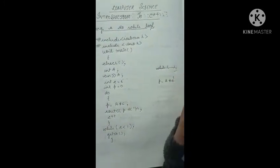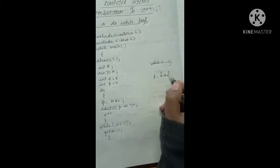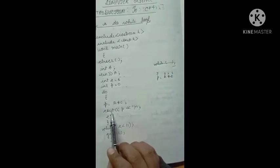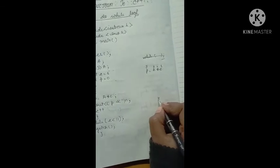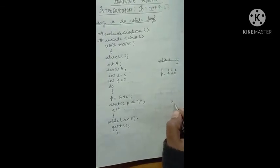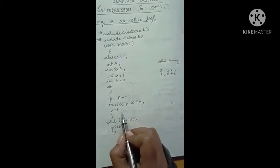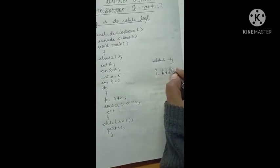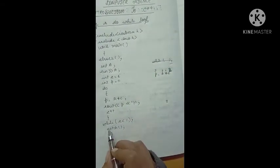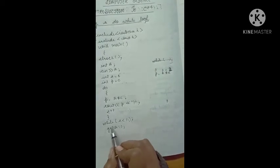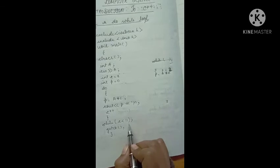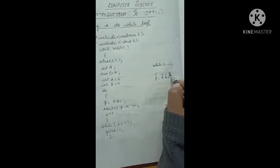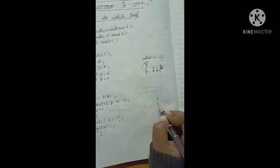The value of c starts at 1. Suppose we want to print the table of 3, so we give a equals 3. Three multiplied by one gives three. The cout p statement displays 3 on the output screen. Then c plus plus increases c to 2. Now the computer checks the condition: is c less than 11? Yes, so again 3 multiplied by 2 equals 6, and 6 is printed on the output screen.